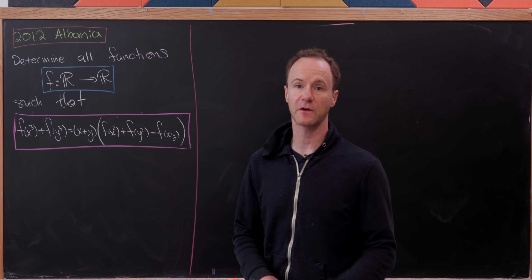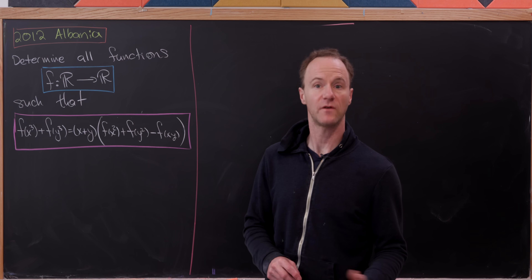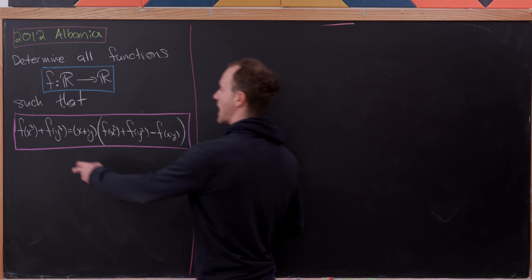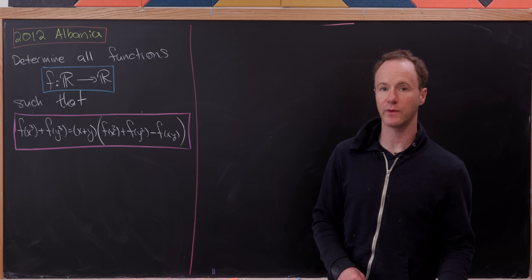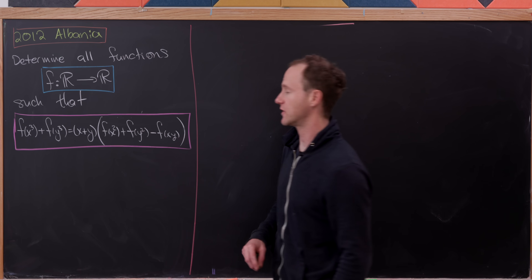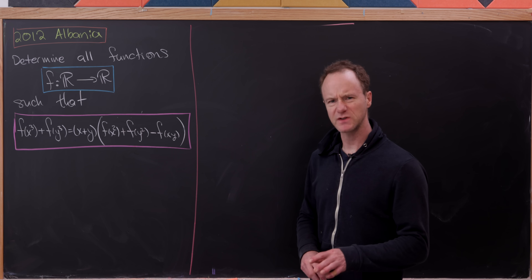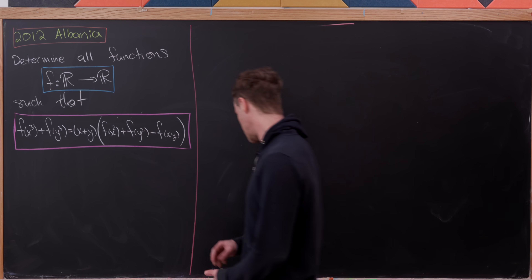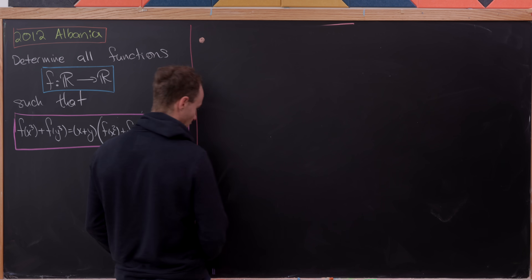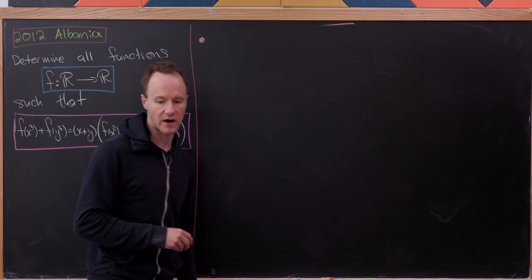Let's check out a nice functional equation from an Albanian math olympiad. We want to determine all functions from real numbers to real numbers satisfying this equation. We have f(x³) + f(y³) equals (x + y) times f(x²) + f(y²) - f(xy). We'll use standard strategies for solving functional equations: starting by evaluating at special points and then broadening the types of points we evaluate at.